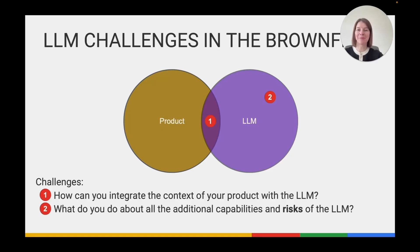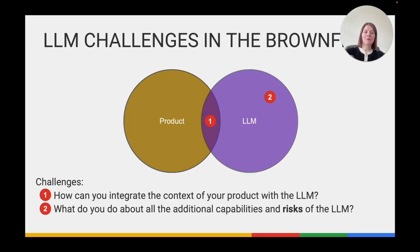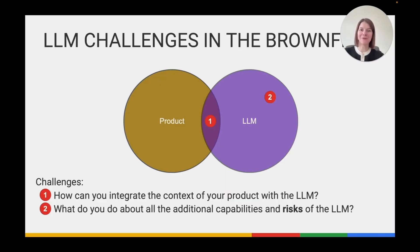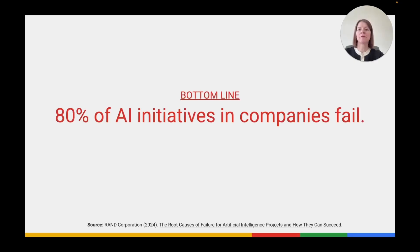The second challenge is that when you bring in a large language model, your product will only use a small part of its capabilities — specifically what's needed for your operations. But the LLM also carries a lot of additional capabilities you don't need, and those come with new risks: additional hallucinations, bias, toxic or harmful behavior. At the beginning, when you're excited about the project, you often won't see these risks. They surface later in production when users actually start using the chatbot, and by then they can have serious consequences.